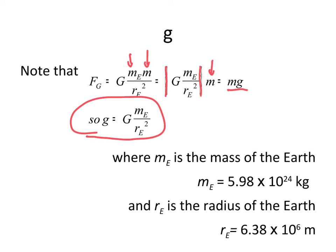Small g is equal to big G, the gravitational constant, times the mass of the Earth over the radius of the Earth squared. The mass of the Earth is of course a known constant, and the radius of the Earth, likewise, is a known constant.